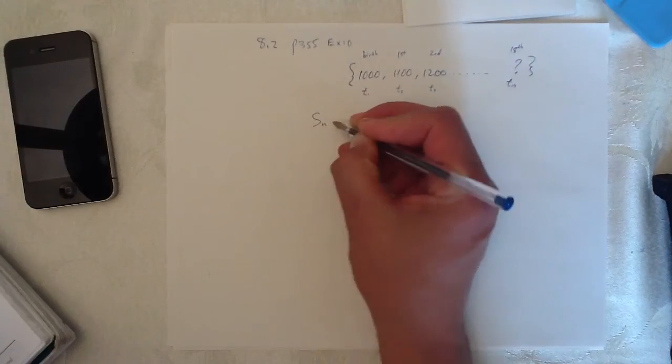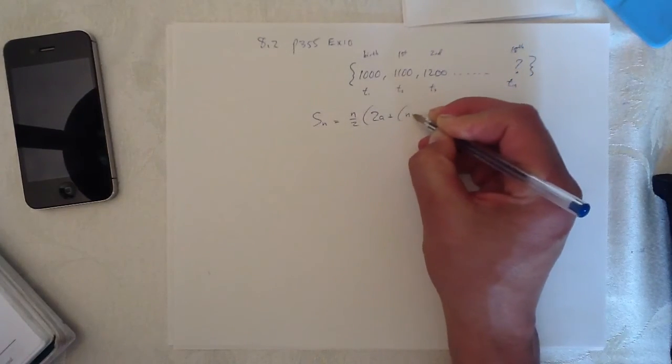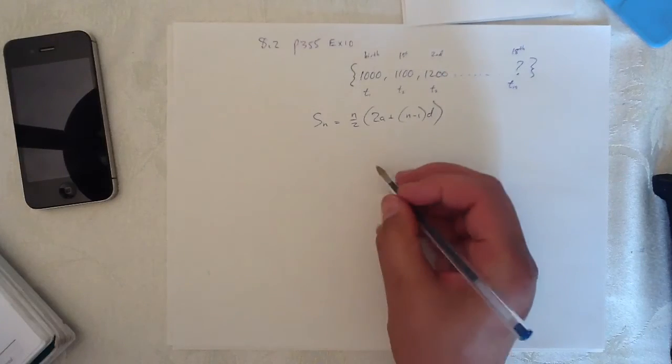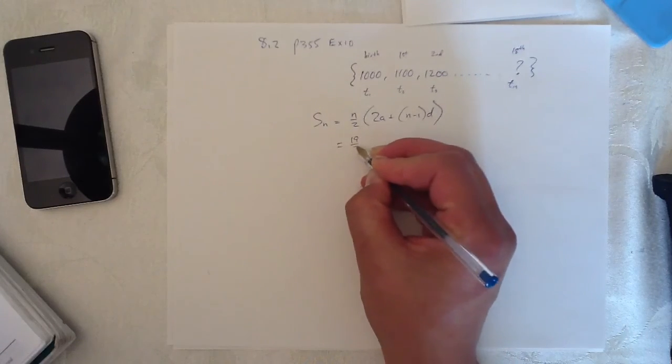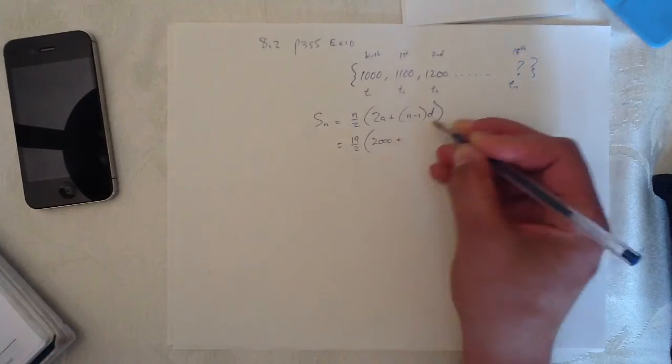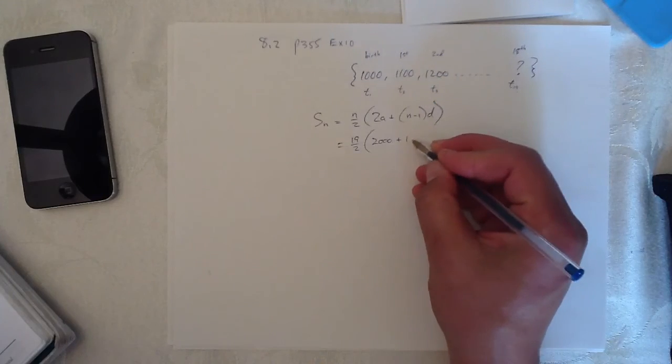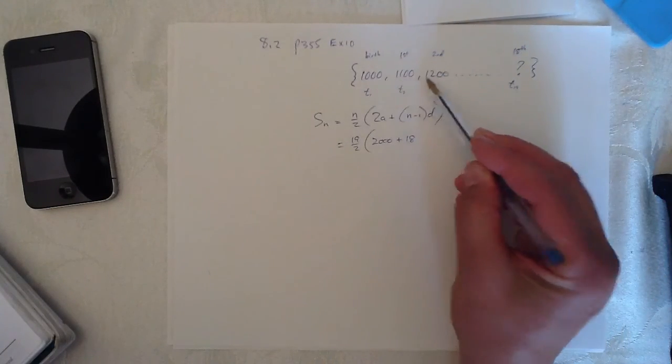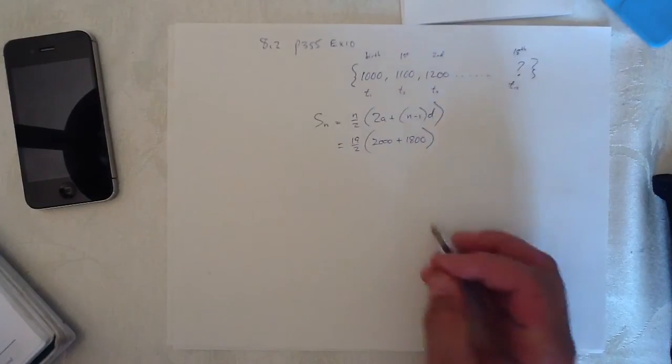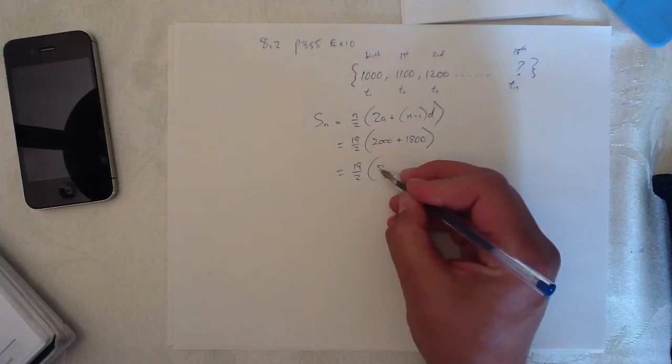Okay, so we're using this formula here. Sum of n equals n over 2, 2a plus n minus 1d. And we can plug in all those values because we know them. We know there's 19 terms. 2a is 2 times 1,000 or 2,000. And n minus 1 is 19 minus 1, so 19 minus 1 is 18. 18 times d and d, the difference here, is 100 every time, so that's 1,800. And there we are. So that equals 19 over 2 times that, which is 3,800.